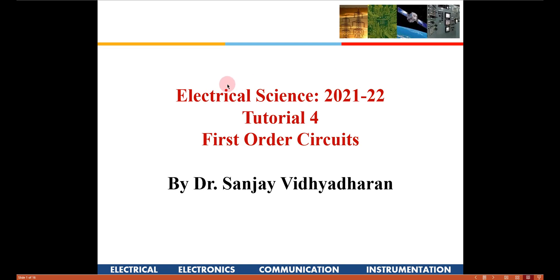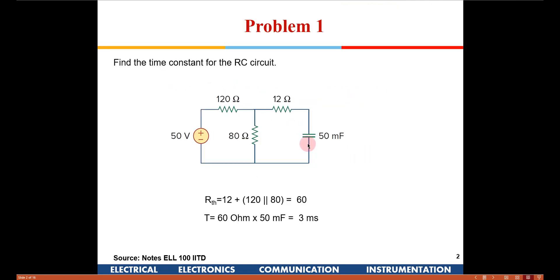Hello everybody. In today's tutorial, we are going to see some problems on first order circuits. The first problem is: find the time constant for the RC circuit shown below. There is a voltage source, 120 ohms resistance, 12 ohms and 80 ohms. We need to find out what is the time constant.